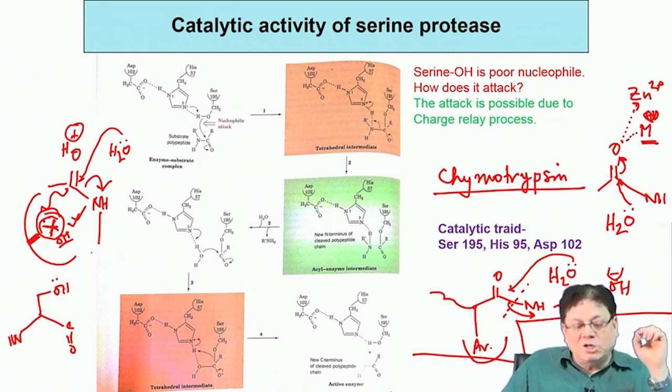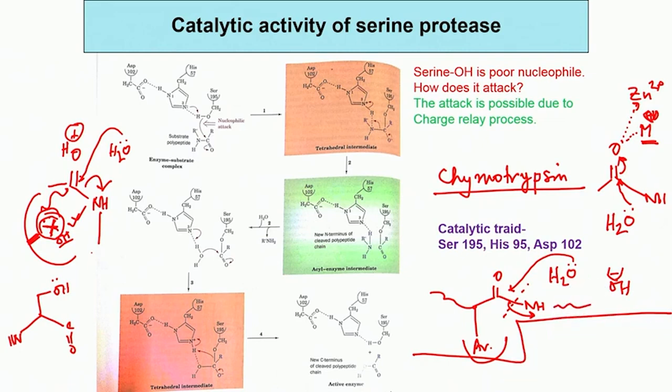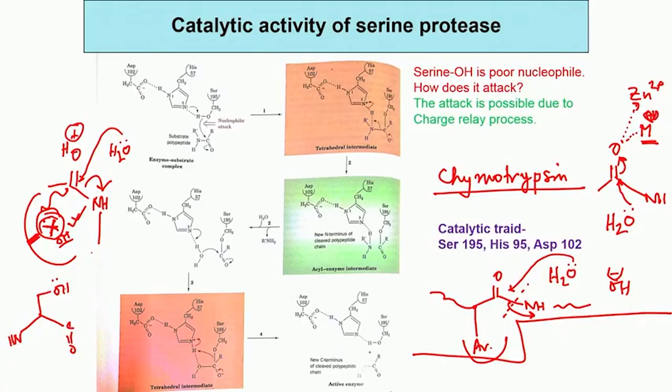So the question is: how is the serine nucleophile activated? The power of the nucleophile has to increase so that it can attack the carbonyl. In the next session we will start from there — how serine is activated and ultimately leads to attack of the carbonyl. Thank you.